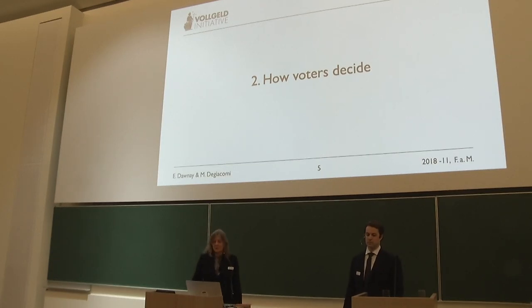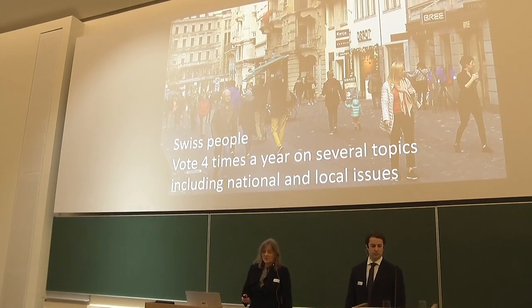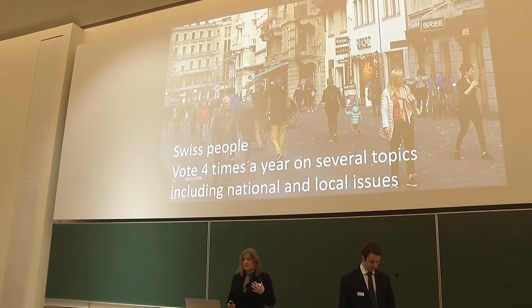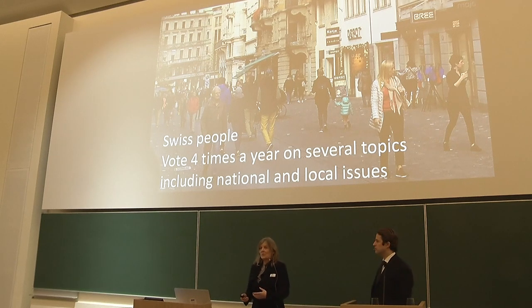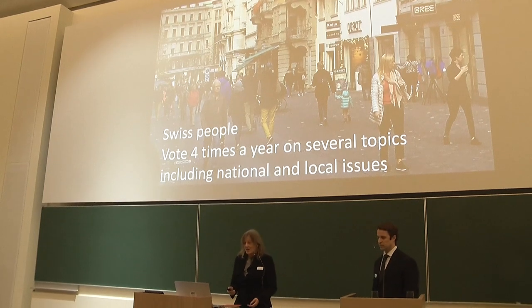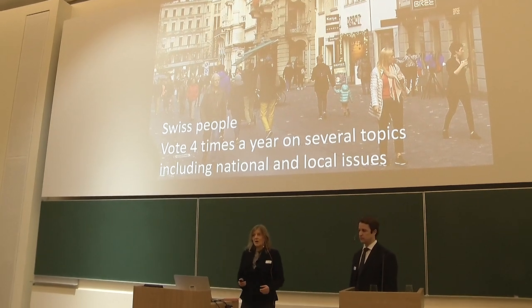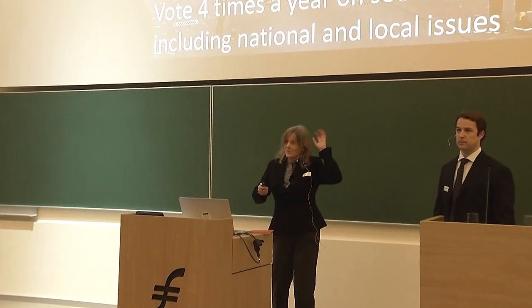How do voters decide? Well, Swiss people vote four times a year, and on each occasion there are usually multiple topics. They might be voting at the local level about whether the local school should have a new sports hall, at the cantonal level about whether a railway line should be extended, or at the national level about whether farmers should be compensated for keeping cows with horns. This is a vote that's happening tomorrow.